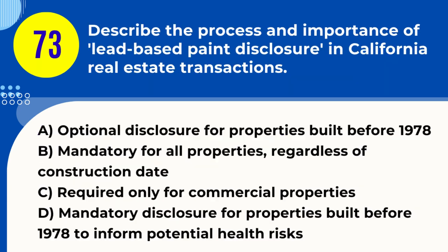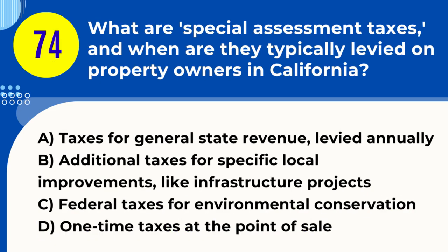Question 73. Describe the process and importance of lead-based paint disclosure in California real estate transactions. A. Optional disclosure for properties built before 1978. B. Mandatory for all properties, regardless of construction date. C. Required only for commercial properties. D. Mandatory disclosure for properties built before 1978 to inform potential health risks. Answer: D. Explanation. In California real estate transactions, lead-based paint disclosure is a mandatory process for properties built before 1978. Sellers must inform buyers about the presence of lead-based paint, which poses potential health risks especially to children. This disclosure helps buyers make informed decisions and plan for potential remediation.